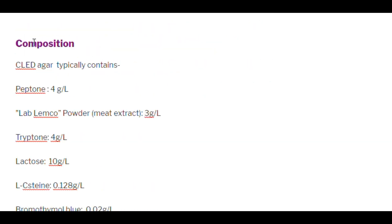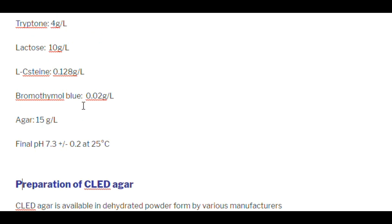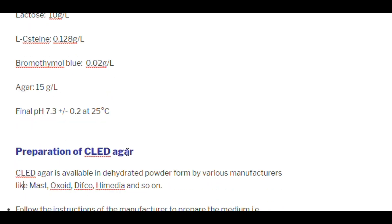The composition contains peptone 4 g/L, Lab-Lemco powder (meat extract) 3 g/L, tryptone 4 g/L, lactose 10 g/L, bromothymol blue indicator 0.02 g/L, and agar 15 g/L. Final pH is 7.3 ± 0.2 at 25°C.